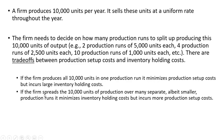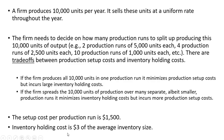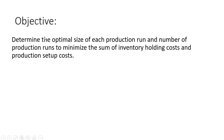On the other hand, if the firm spreads the 10,000 units of production over many separate, albeit smaller, production runs, it minimizes inventory holding costs but incurs many more production setup costs. The setup cost per production run is $1,500, and the inventory holding cost is $3 per unit of average inventory size. Our objective is to determine the optimal production run size and number of runs to minimize the sum of inventory holding costs and production setup costs.